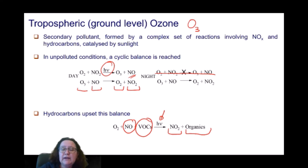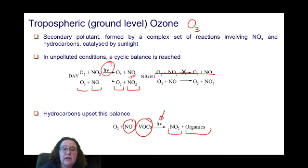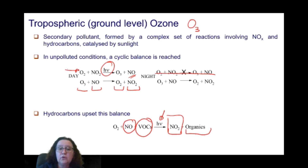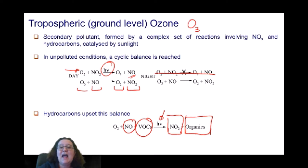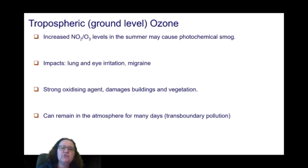I will be looking more into what those organic compounds are. Those organics, plus the additional formation of more nitrogen dioxide which feeds back into the ozone-forming reaction, means that more ozone is formed and not sufficient ozone is destroyed. Ozone is an oxidising agent and an irritant. Those organic compounds are also oxidising agents and irritants. That is how an episode of photochemical smog is formed — it is due to the increase of nitrogen dioxide and ozone levels in an area, associated with the summer months because these reactions are catalysed by light.